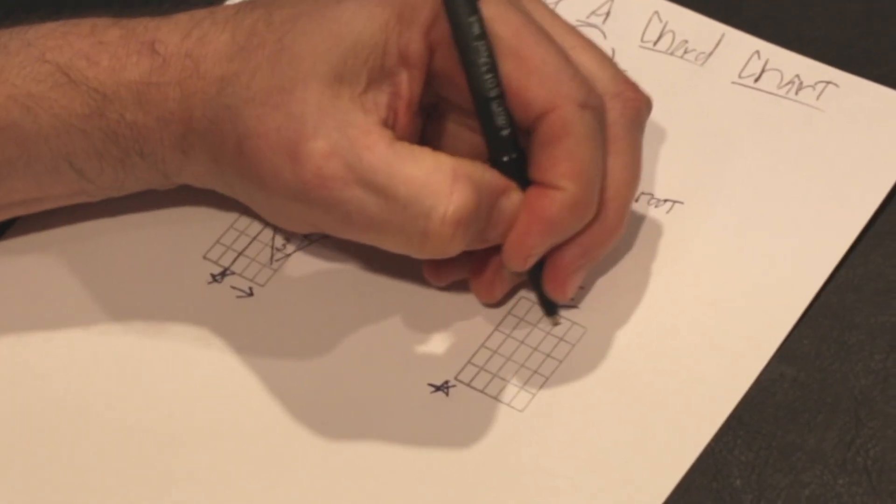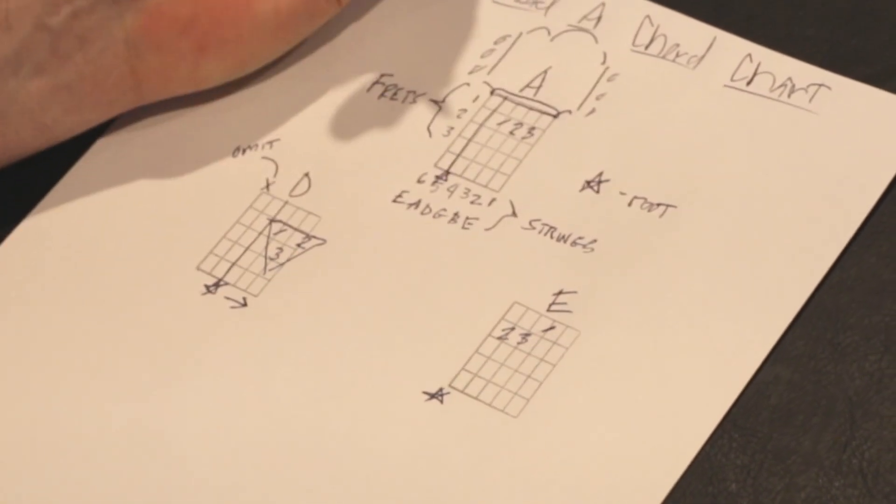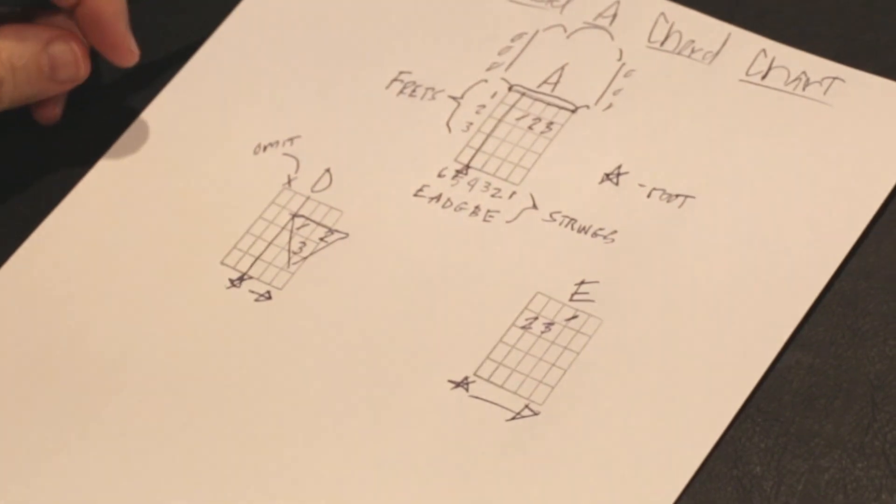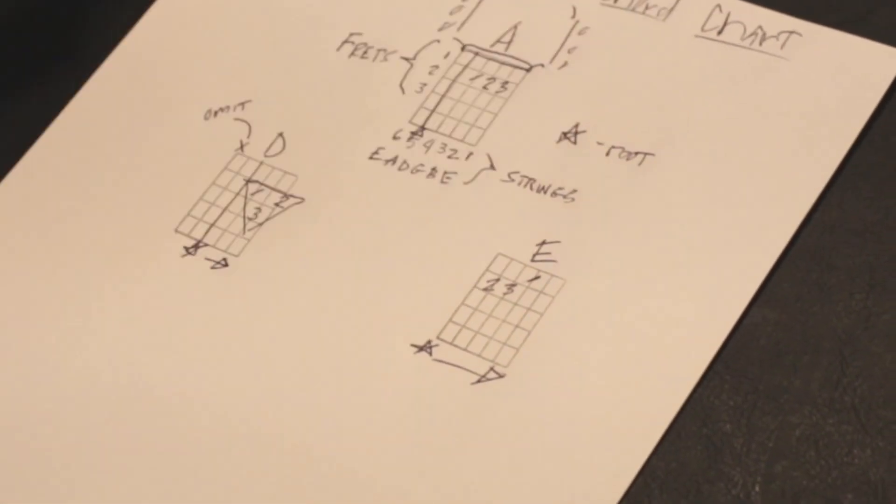The E is just first finger's here, second finger's there, and third finger's there. You can play all six strings on this. And there you have it. A, D, and E, how to read a chord chart.